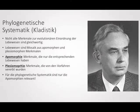Was ist das Besondere an dieser Methode im Vergleich zu anderen? Hennigs wichtige Schlussfolgerung war, dass die Merkmale, die ein Lebewesen besitzt, nicht gleichwertig sind. Jedes Lebewesen ist ein Mosaik aus sogenannten fortgeschrittenen Merkmalen — auch Apomorphien genannt — oder ursprünglichen Merkmalen — auch Plesiomorphien genannt. Apomorphien sind Merkmale, die nur die entsprechenden Lebewesen haben. Plesiomorphien sind jene, die man von den Vorfahren vererbt bekommen hat.